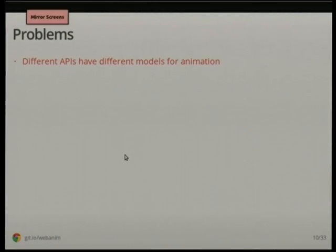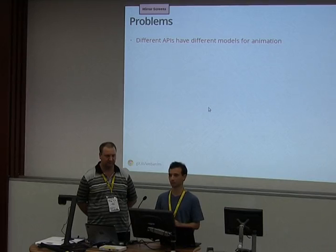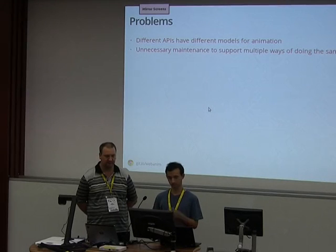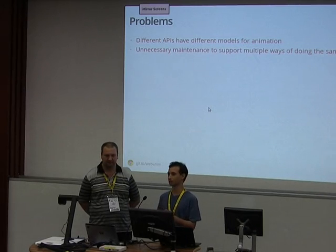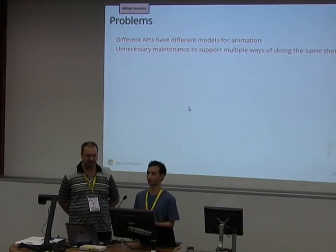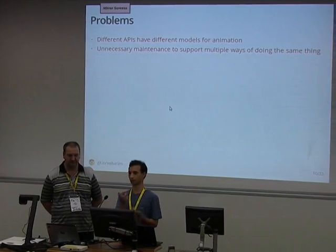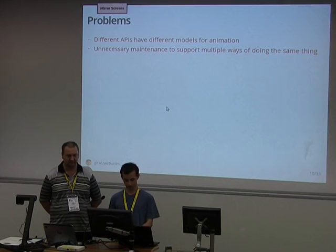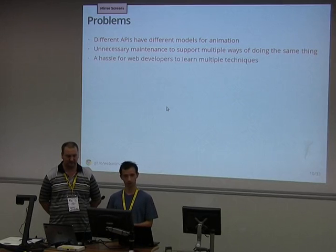Overall, the issues with the current state of animation on the web are that all these different APIs — CSS, SVG, and various JavaScript libraries — all have their own idea of what animation is, with different conceptual models. That means more work for browsers implementing these different models, with duplicated logic. Even though they're not quite the same, they're more or less achieving the same thing: making some value interpolate from one to another according to some time model. And implementing that multiple times is not good news for web developers or browsers.